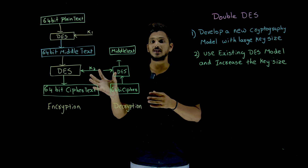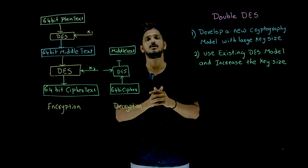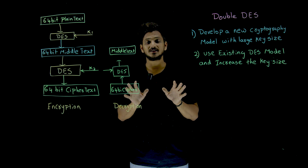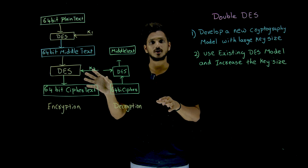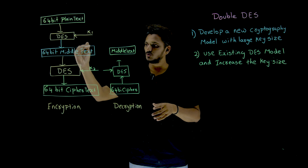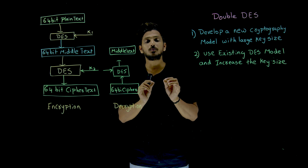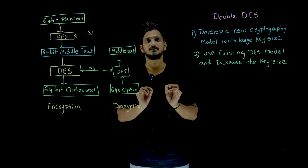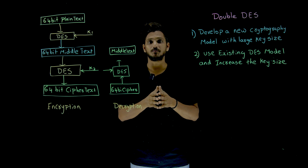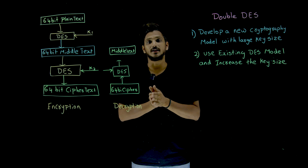Now, in order to crack the key in double DES, you have to check 2 power 112 possibilities to identify both keys. But still, this system did not work in real-time existence — there is a flaw. Even though you use two keys, it is possible to crack both keys using only 2 power 56 possibilities. How? We are going to discuss that concept — the man-in-the-middle attack — in our next class.